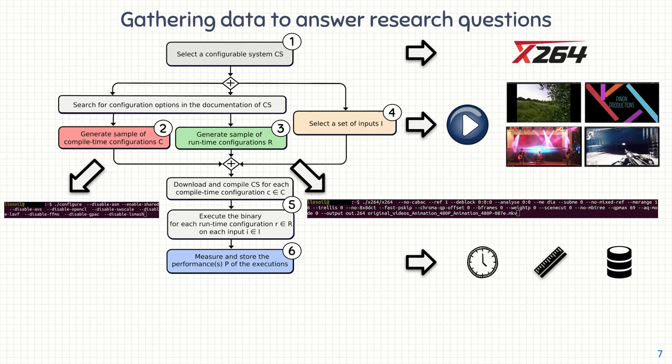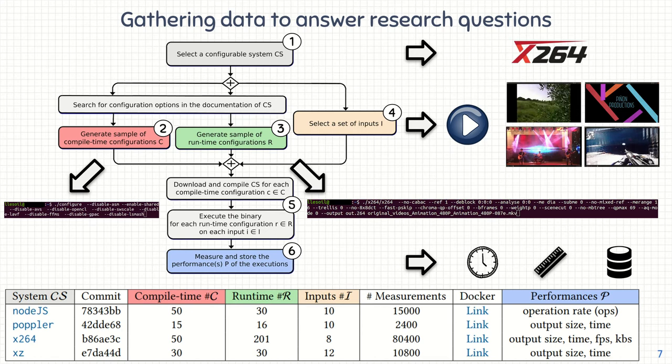We applied this protocol to four different systems: Node.js (a JavaScript runtime environment), Poppler (a library used to render PDFs), X264, and XZ (a data compression tool). For Node.js, we input JS scripts from its test suite; for Poppler, books as PDFs about computer science; and for XZ, we compress the Silesia corpus.